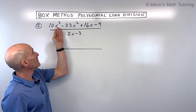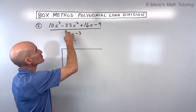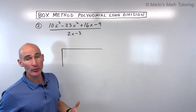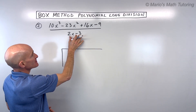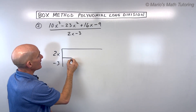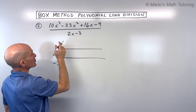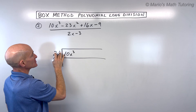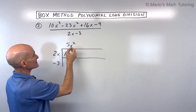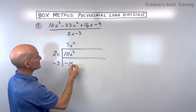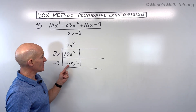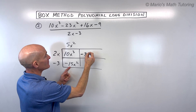Okay, example number two. We've got this fraction here — remember, when you see a fraction bar, this is really like a division sign, so we have the numerator being divided by the denominator. We're going to do polynomial long division using the box method. We take what we're dividing by and put it on the side of the box: 2x and negative 3. We start with the highest power term, 10x cubed, and say: what times 2x equals 10x cubed? That's 5x squared. Distributing gives us 10x cubed, and 5x squared times negative 3 gives us negative 15x squared. We have negative 23x squared, and here we have negative 15x squared, so we need another negative 8x squared.